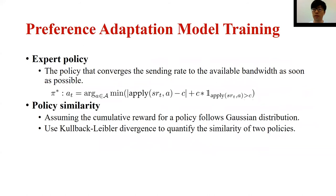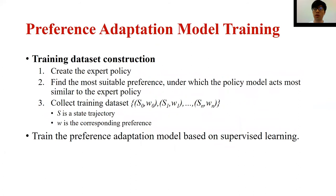We now introduce the training of the preference adaptation model. In the training stage, since we know the available network bandwidth, we can easily construct the expert policy, which converges the sending rates to the available bandwidth as soon as possible. We assume the cumulative reward for a policy follows the Gaussian distribution. Then we can use the KL divergence to quantify the similarity of two policies. Based on this similarity model, we find the most suitable preferences for each training environment and construct a training dataset, where each entry is a pair: the key is the state trajectory observed in the environment and the value is the corresponding preference. Built upon this dataset, we train the preference adaptation model using supervised learning.